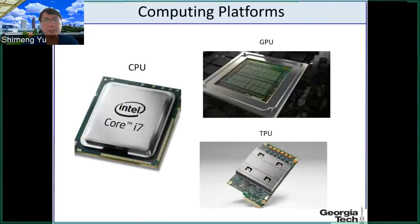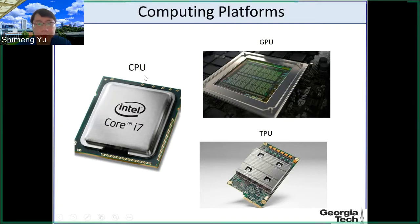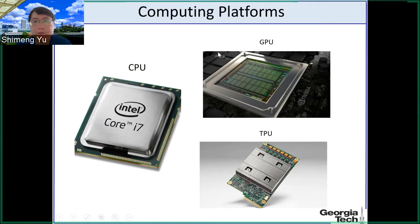Looking at computing hardware platforms, you are familiar with the CPU, central processing unit. One example is the Intel Core i7, a popular processor for laptops and workstations. CPU is designed for generic computation — you can run any program on it, so it's very flexible in terms of programming. But recently the industry is moving away from CPU to other computing platforms for more specific workloads.